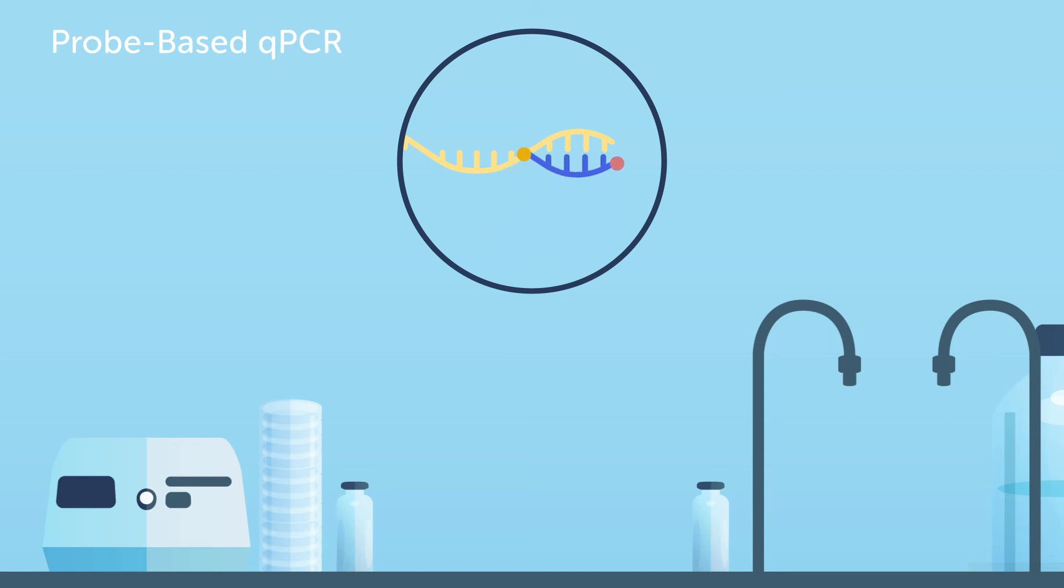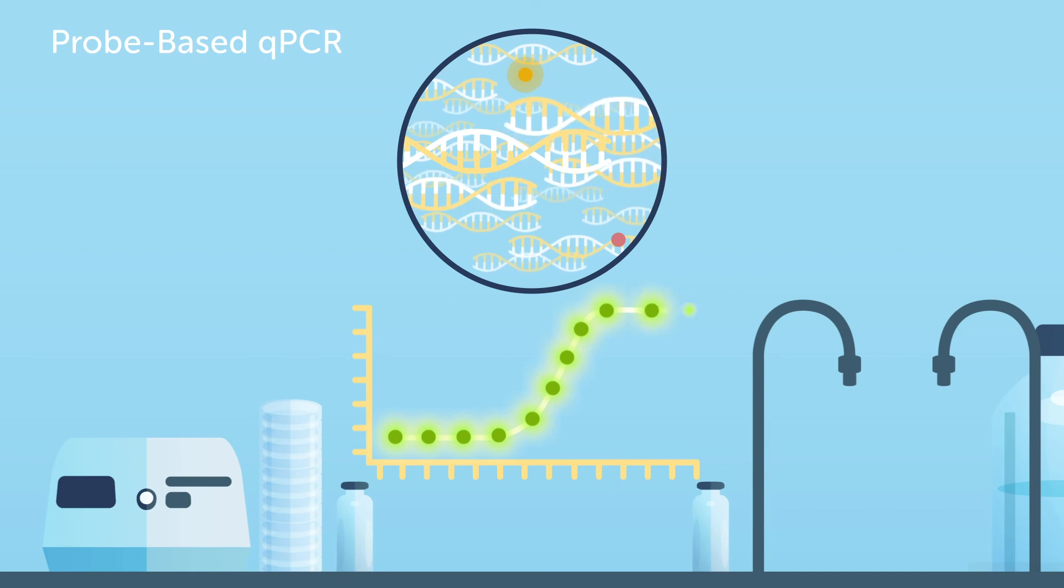But during the amplification reaction, the probe binds to a template and gets degraded by Taq polymerase. Once the probe is degraded, the reporter and quencher molecules are no longer held in close proximity, and the fluorescence signal can now be detected. The amount of fluorescence generated is proportional to the amount of QPCR products produced.